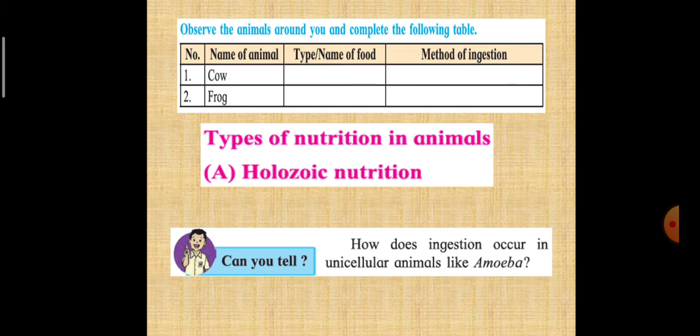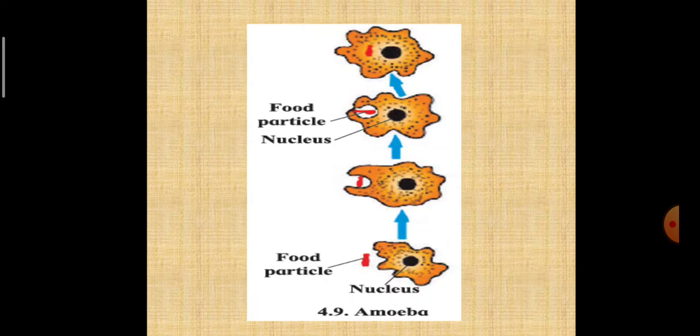So it does not have a mouth. Amoeba does not have a mouth for ingestion. Now let us see then how does it do it. Amoeba surrounds the food particle from all the sides to take it into the cell, as you can see here. After that, what it does is it digests the food with the help of different enzymes. Undigested food is left behind as the amoeba moves further with the help of pseudopodia.